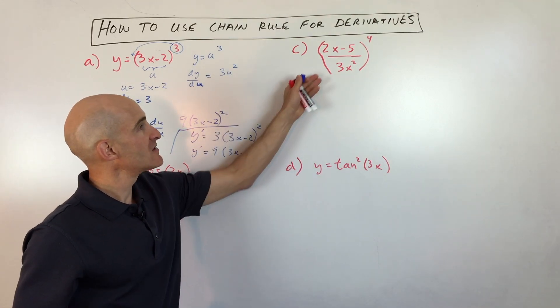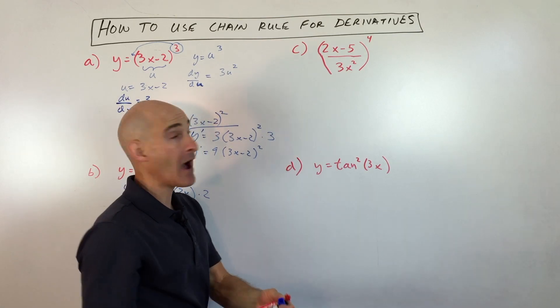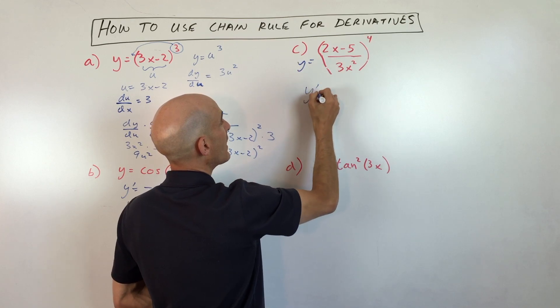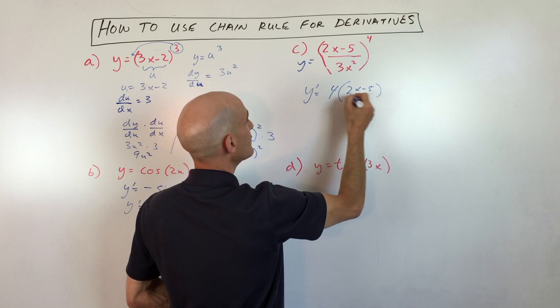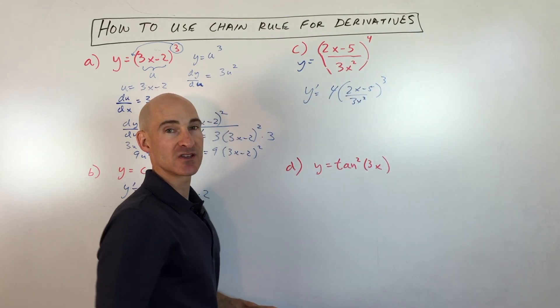Let's look at another example. This one here, same thing. We're raising this quantity to a power. We're going to use the power rule by bringing the 4 down in front. So we have y prime equals 4 times (2x minus 5)/(3x squared), and we're going to subtract 1 from the exponent, so cubed.